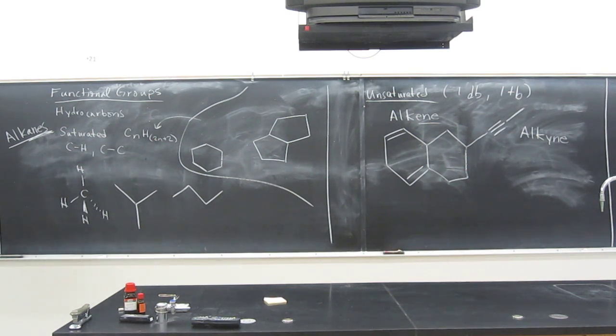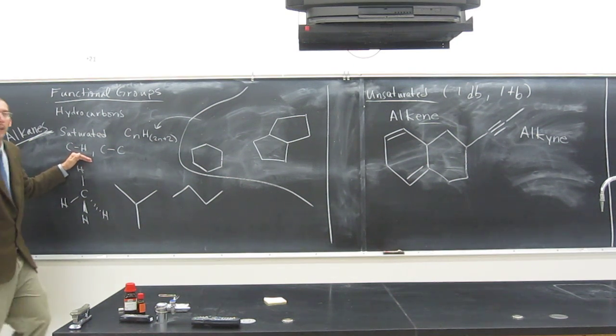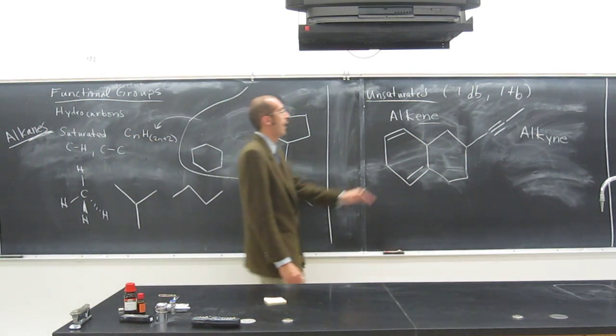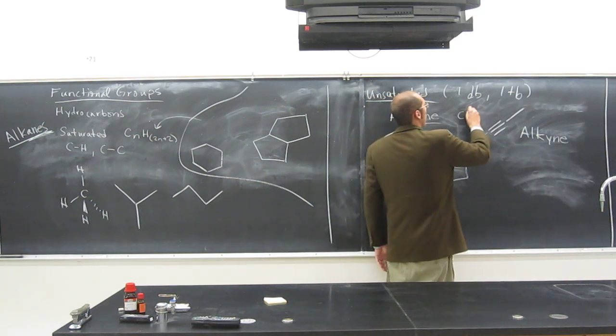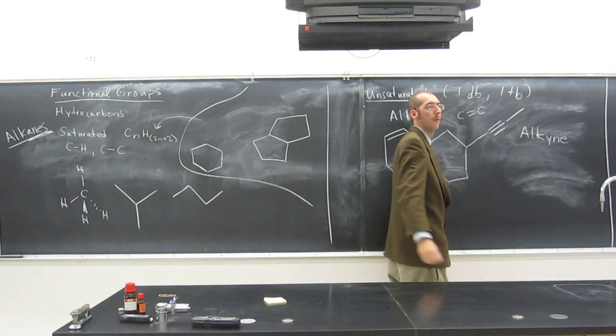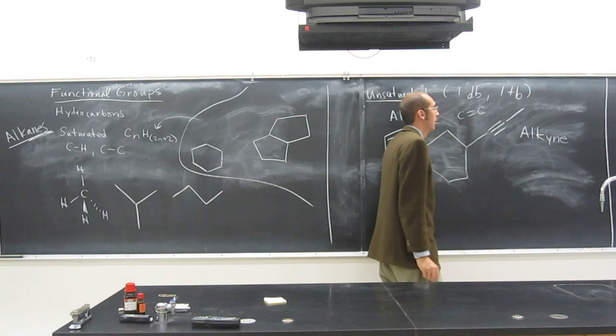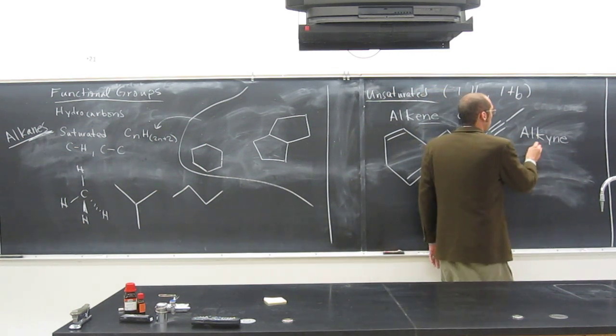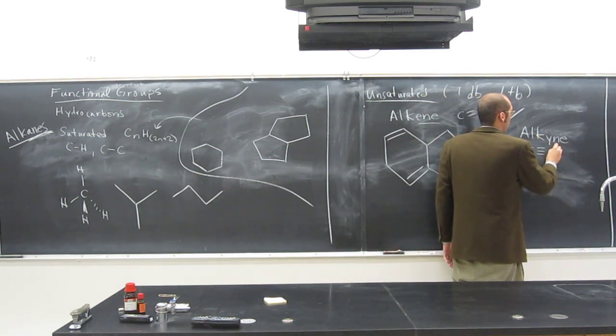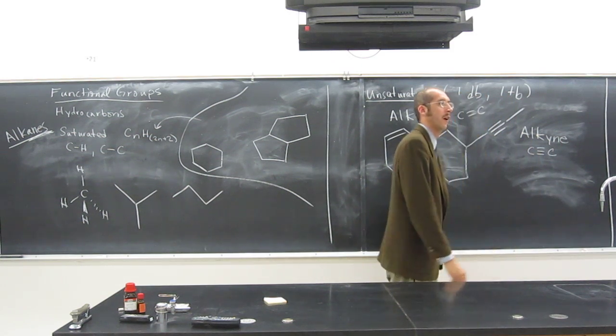The functional groups for alkanes are CH single bonds. The functional group for alkenes are CC double bonds. The functional group for alkynes are CC triple bonds, right?